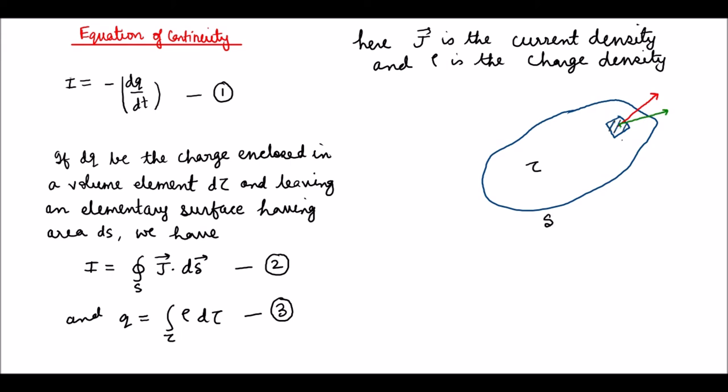This is the surface S and this is volume tau, and this is the elementary surface dS. Now this is the direction of dS and this is the direction of the current density J.